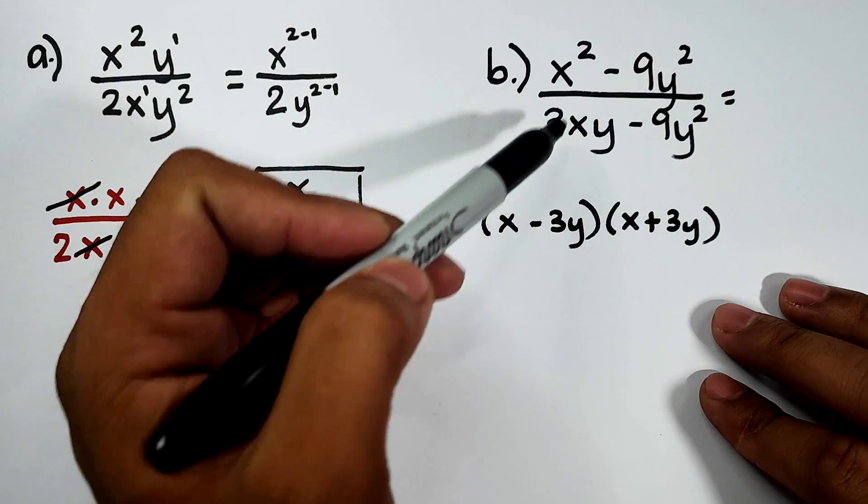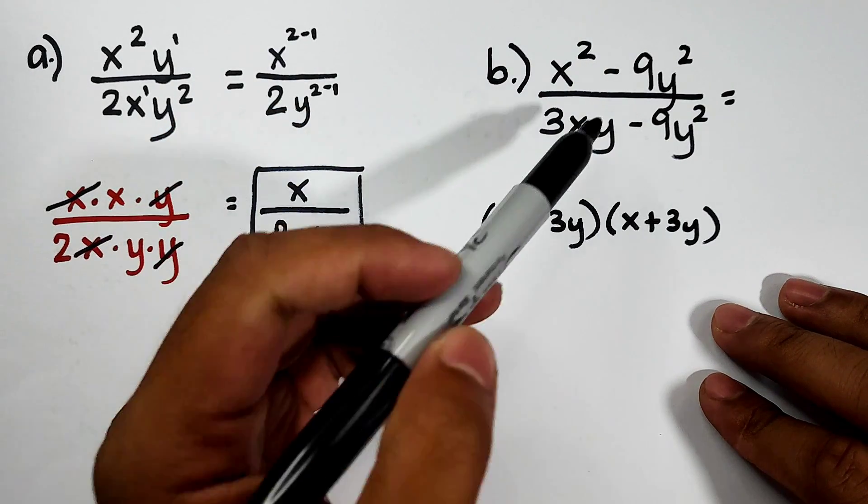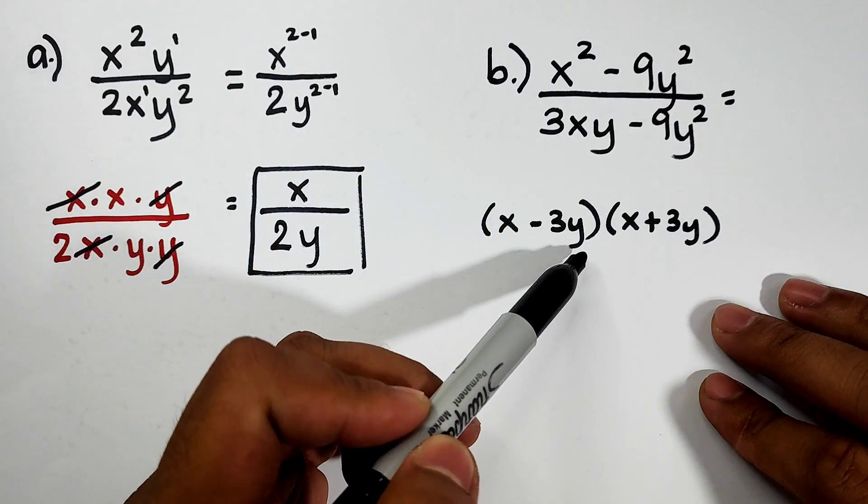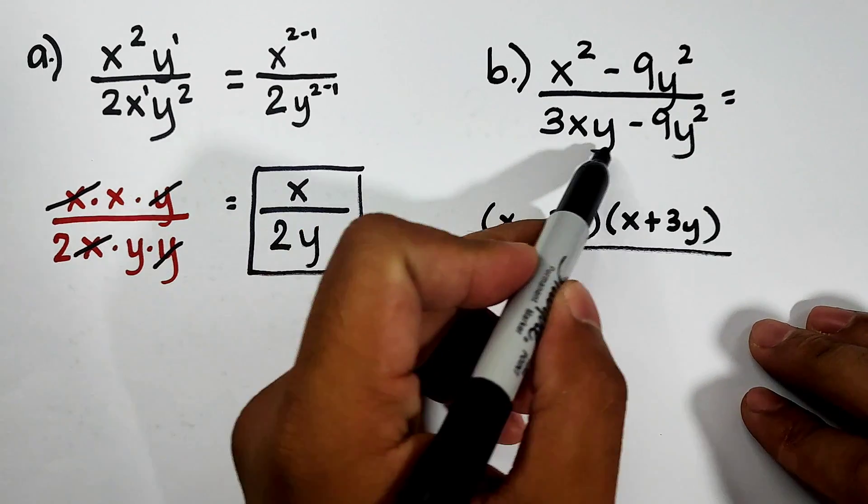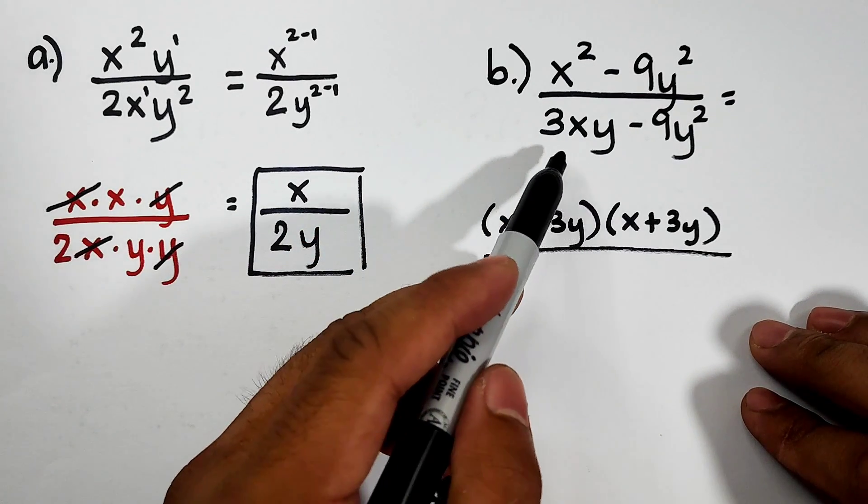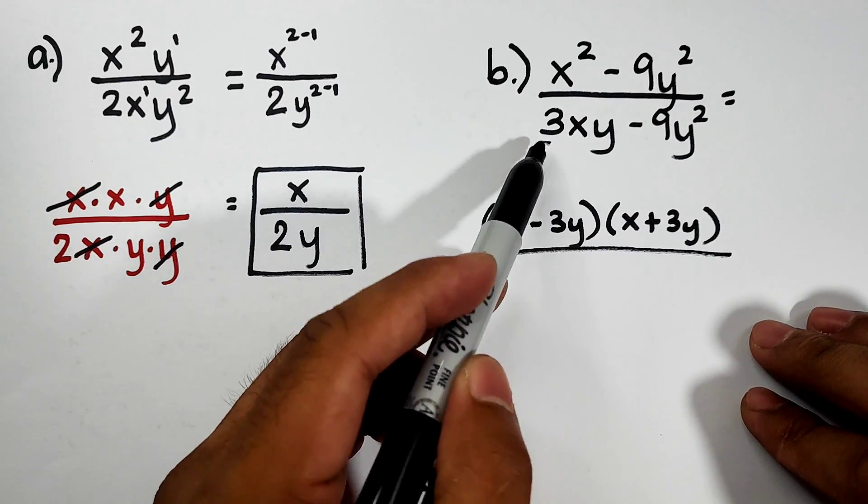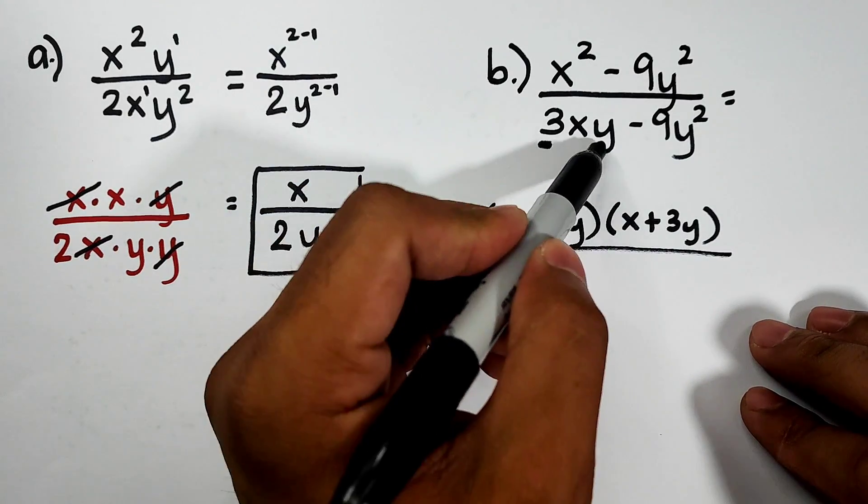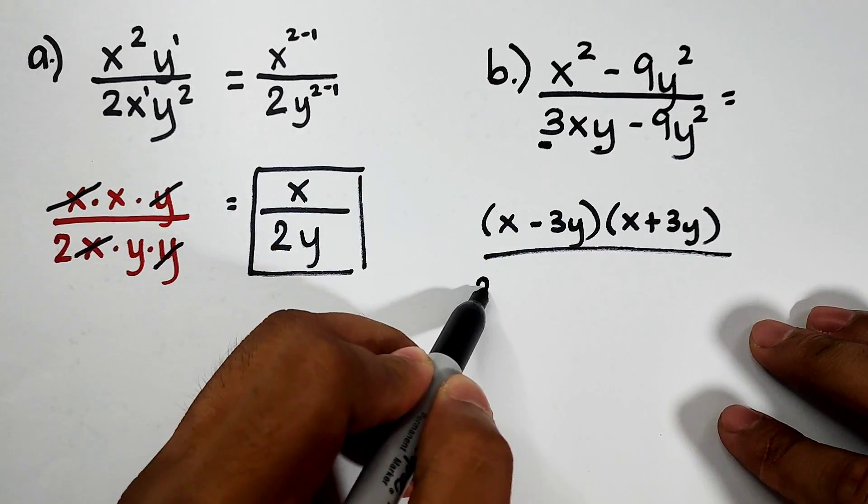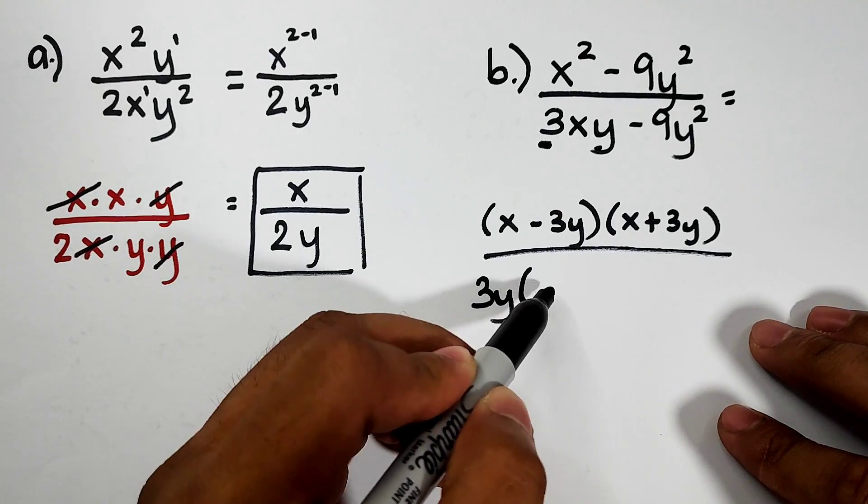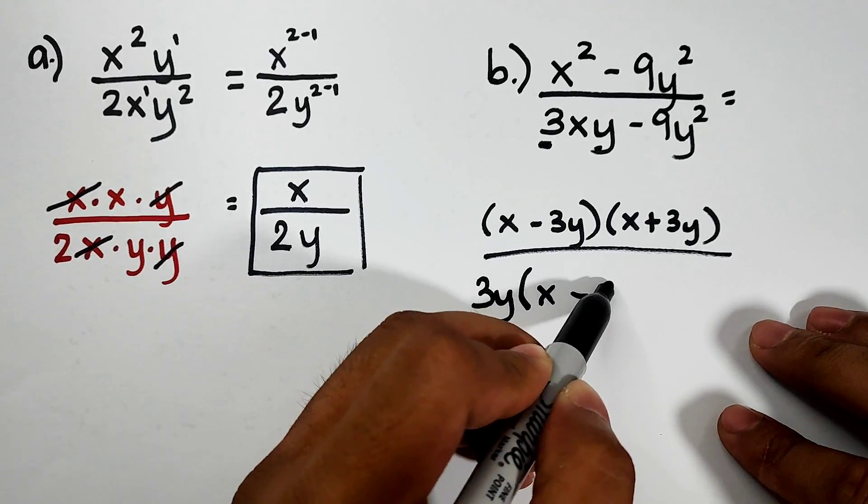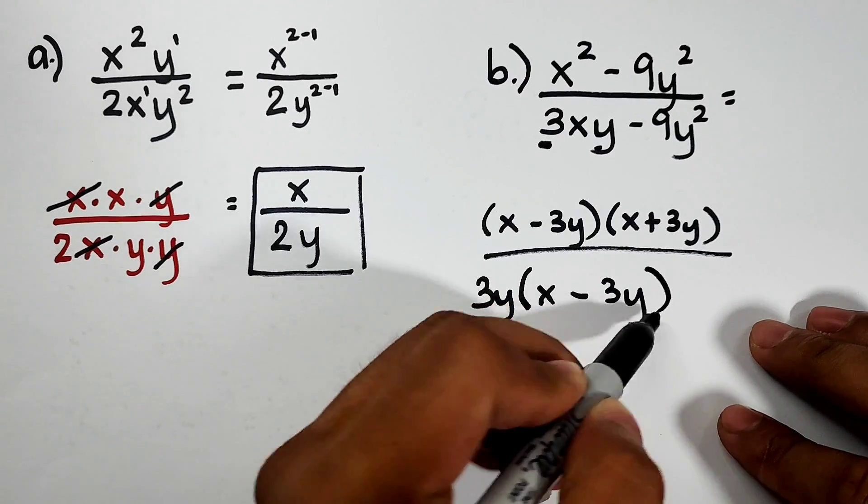How did we get that? Square root of x² is x. Square root of 9y² is 3y. Over. For the denominator, what we can do here is common monomial factoring. What is common is 3 and y. So 3y outside and then the remaining factors inside is x - 3y.